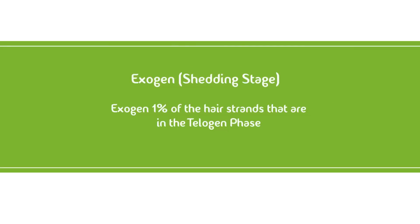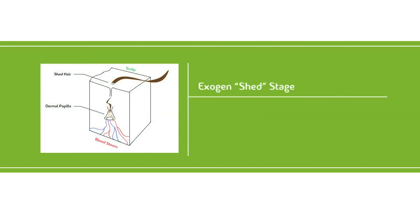The final and less known stage is called the exogen, or shedding stage. 1% of the hair strands that are in the telogen or rest stage are in the exogen stage. Before your hair strand enters the exogen stage, it's firmly anchored within the follicle. During the exogen stage, the resting clubbed hair is released, and a simple comb or brushing of the hair will cause it to shed. Everything in your body works like a well-organized orchestra — it's constantly renewing and destroying itself.